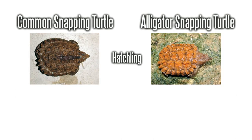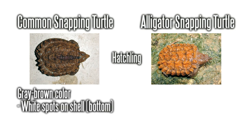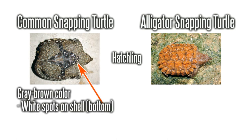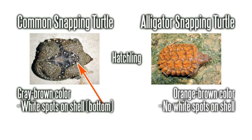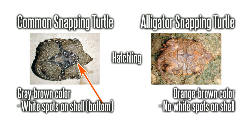The hatchlings look different, too. Common snapper hatchlings are grayish-brown with white spots on their undershell. Alligator hatchlings are orangey-brown with no white spots.